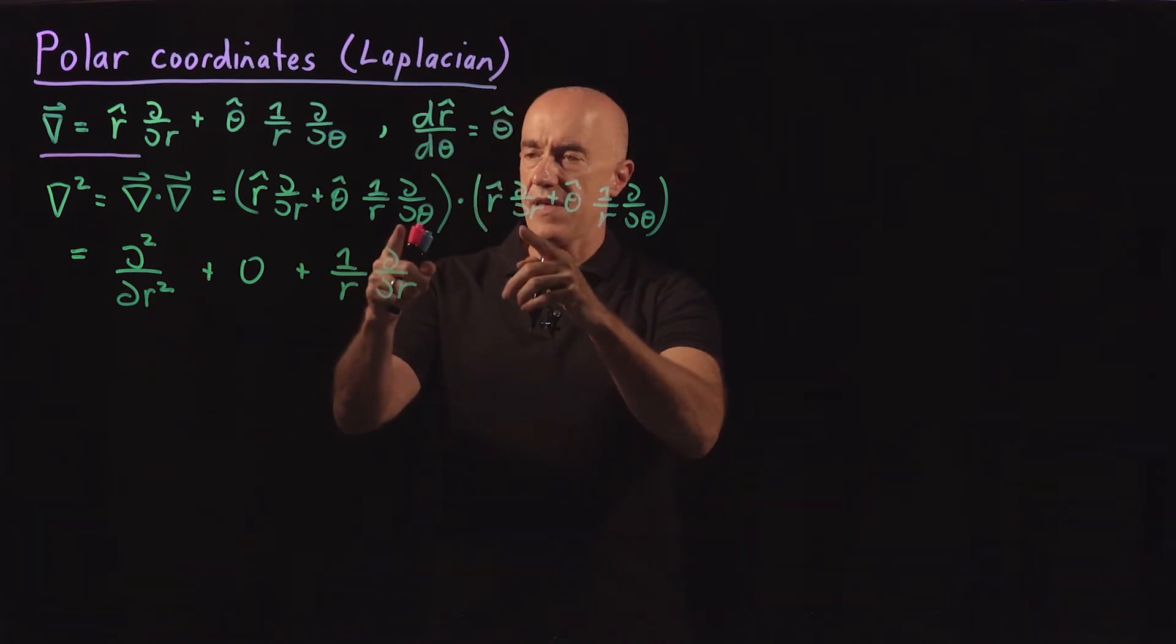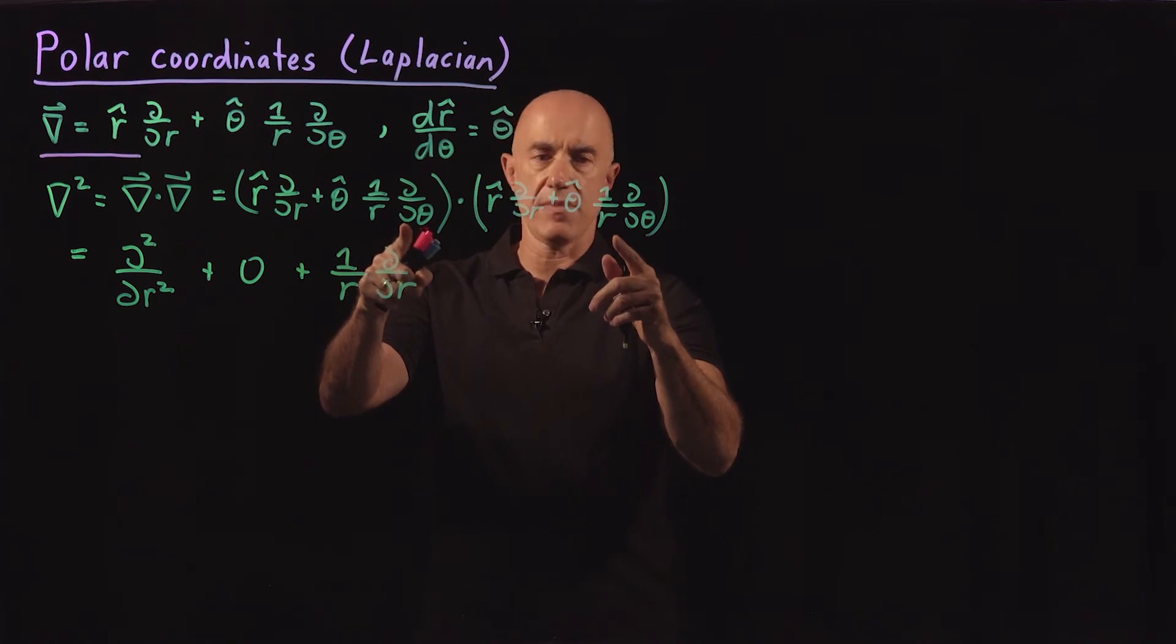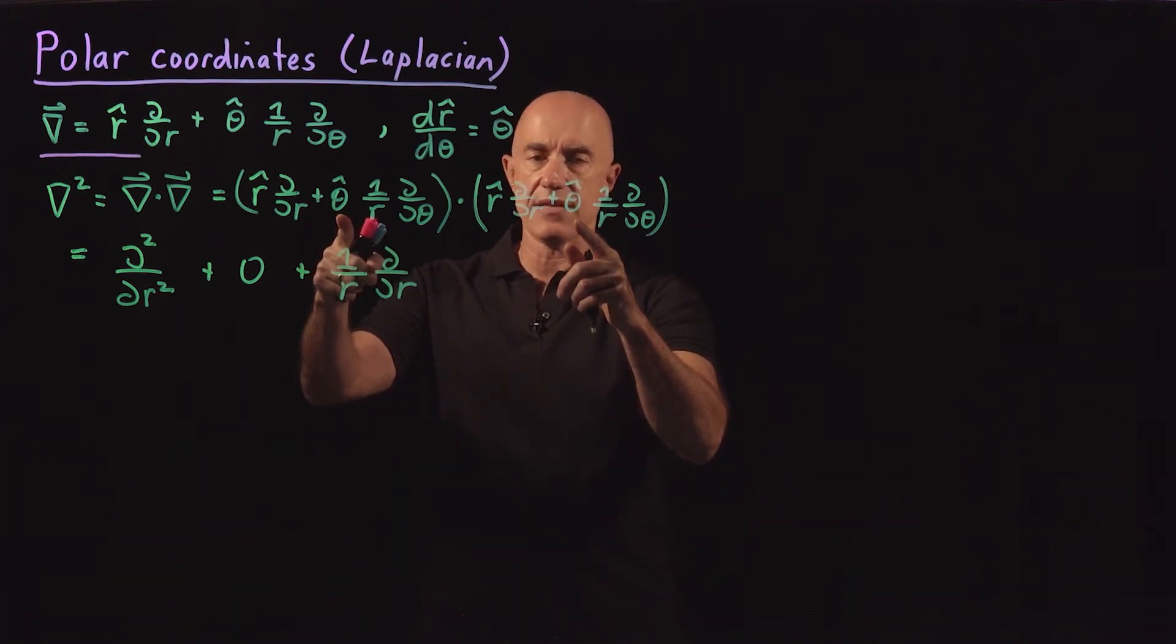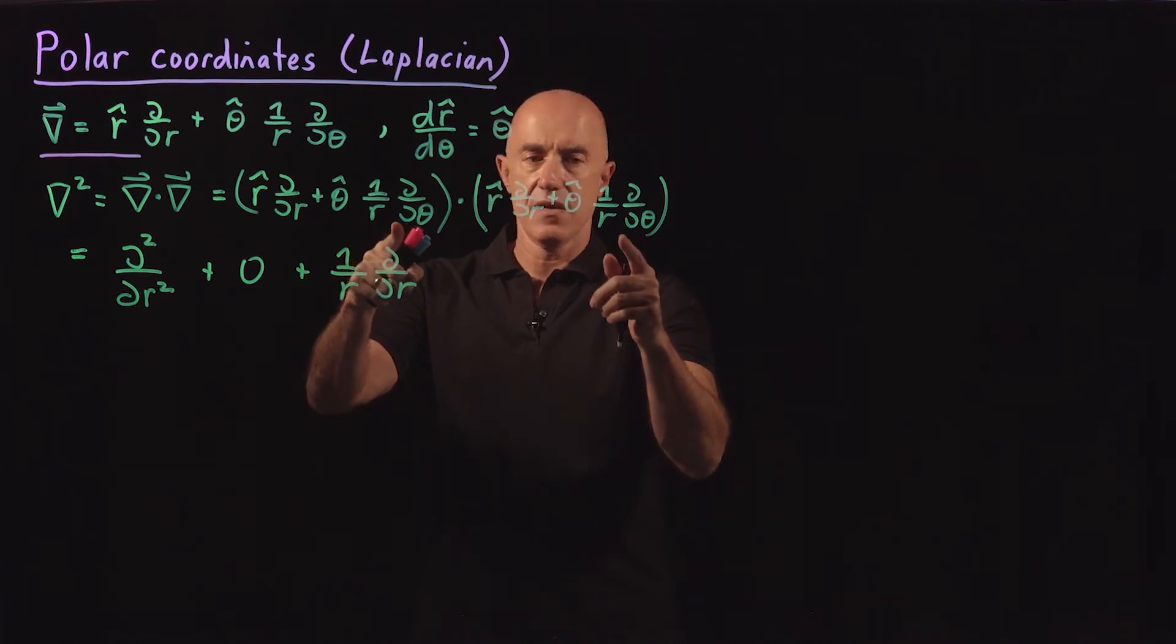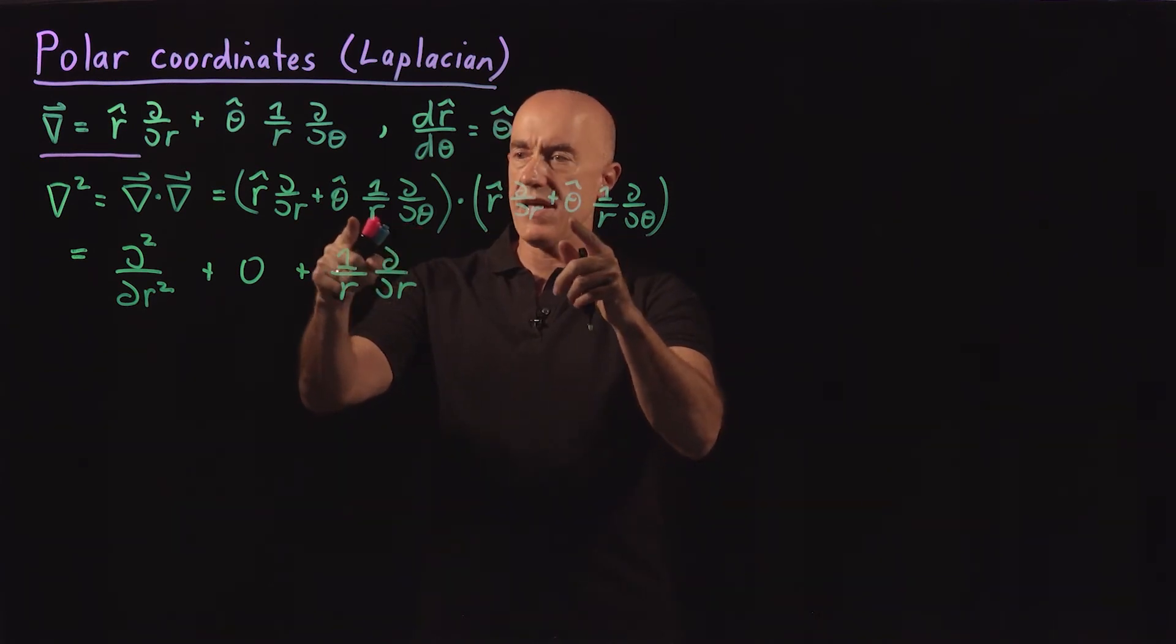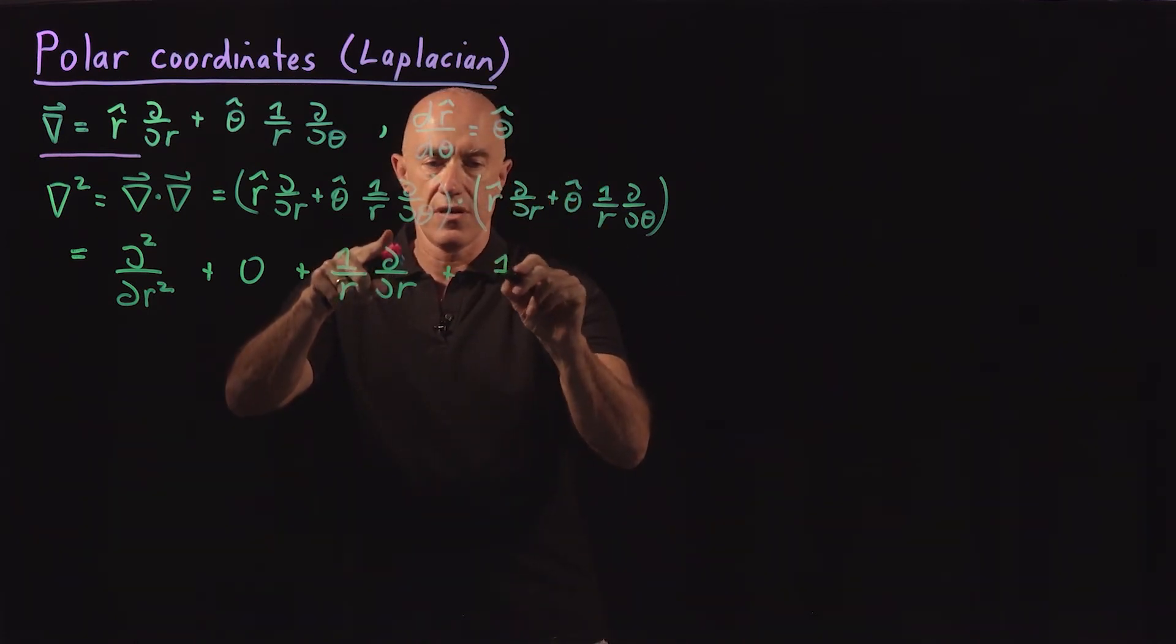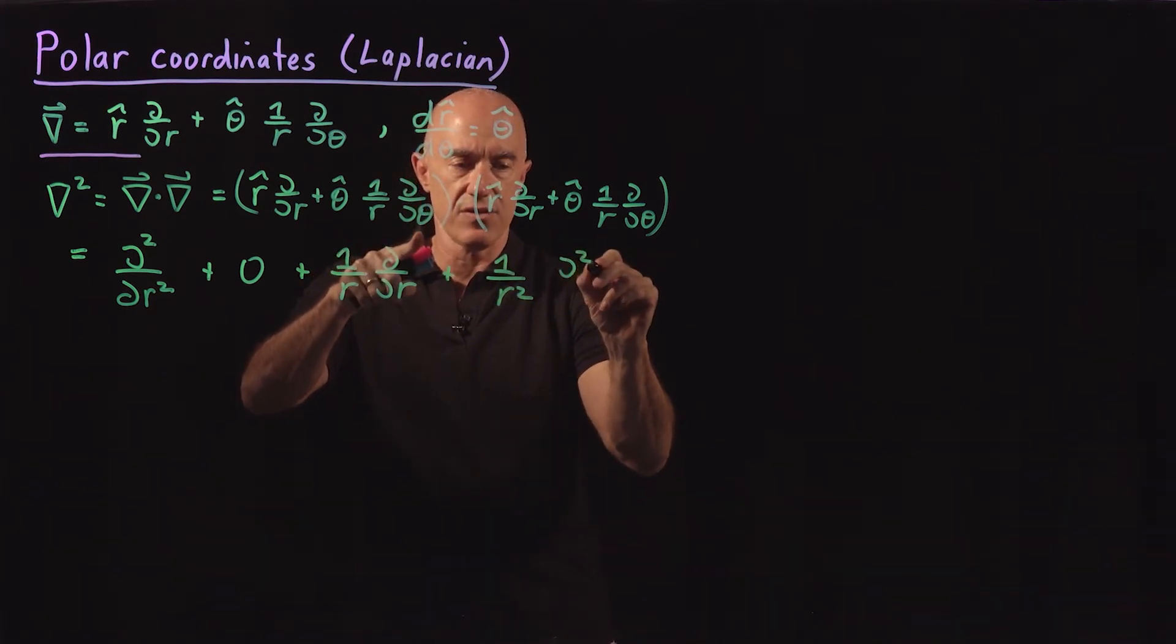Because then we have theta hat dot theta hat, which is 1. Finally, on this last term here, theta hat depends on theta. But dθ hat/dθ gives us a minus r hat, which is perpendicular to theta hat. So that term is 0. So this derivative then just works on the derivative term. Theta hat dot theta hat is 1. So we end up with plus 1 over r squared, 1 over r times 1 over r times the second derivative with respect to theta.